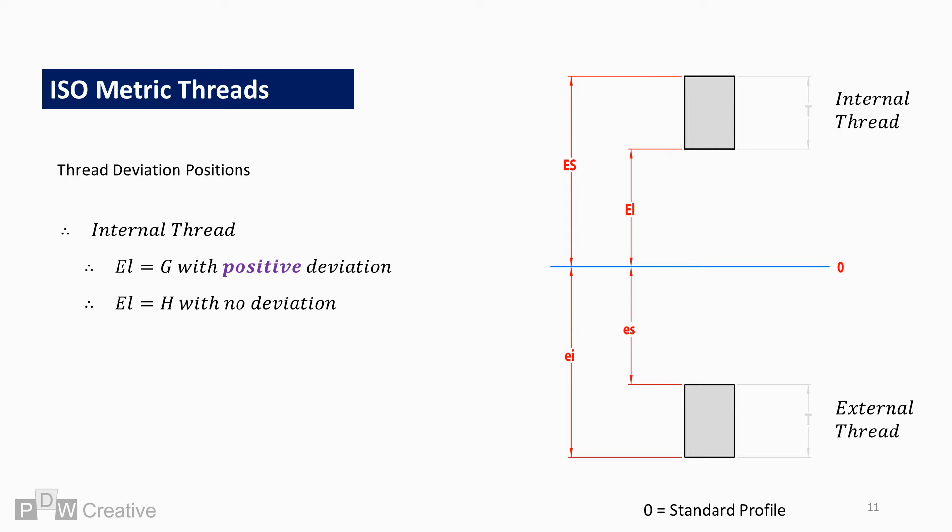Capital ES and EL mark the deviation. Deviation positions are categorised using letters. For the metric internal thread, we only use two positions. These are G and H.